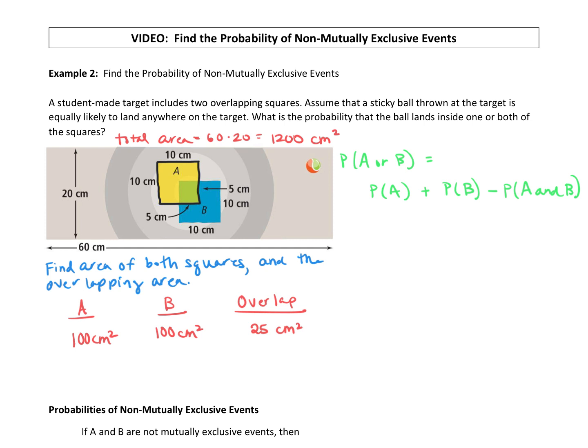The probability that it lands in square A - we do probabilities with areas - is 100 centimeters squared over the total 1,200. Plus square B has an area of 100 over the total 1,200. Then we subtract the area of A and B, that overlap, which was 25 over the total area, 1,200. Working with fractions, all common denominators, we keep our 1,200. 100 plus 100 minus 25 is 175. That reduces to 7/48ths.